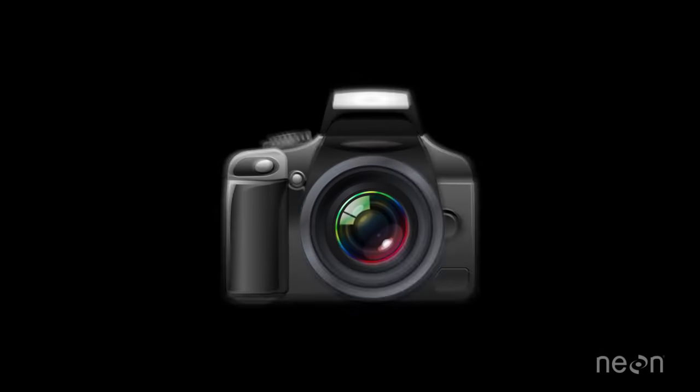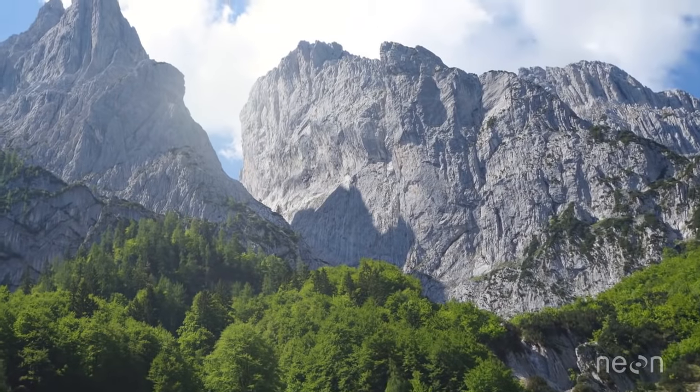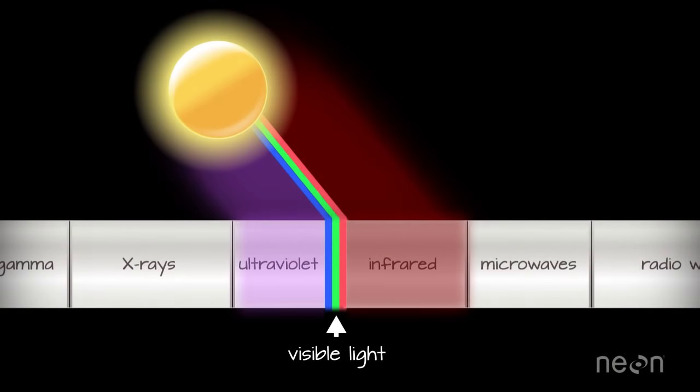The typical camera that you use measures and records visible light that objects like trees and rocks reflect. This light might come from the sun, but it also might come from other sources, like light bulbs.